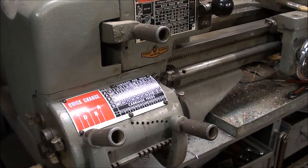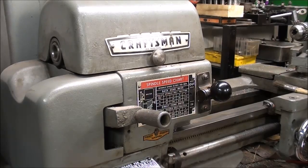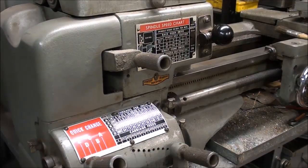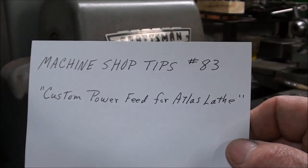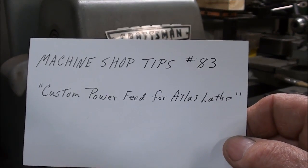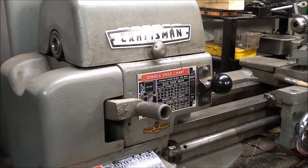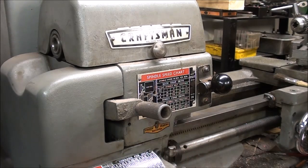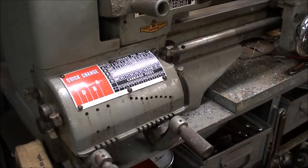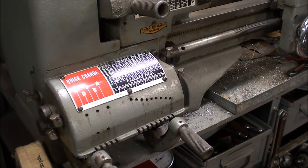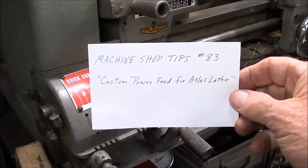I'm just across the aisle in my basement here, and this is my Atlas Craftsman lathe 12-inch that I have had for some time. I was so disgusted with these feed rates that over 10 years ago, I made a modification, and that's shown in a video. That's Machine Shop Tips number 83, and it's called Custom Power Feed for the Atlas Lathe. This was my way around the heartache of this feed system.